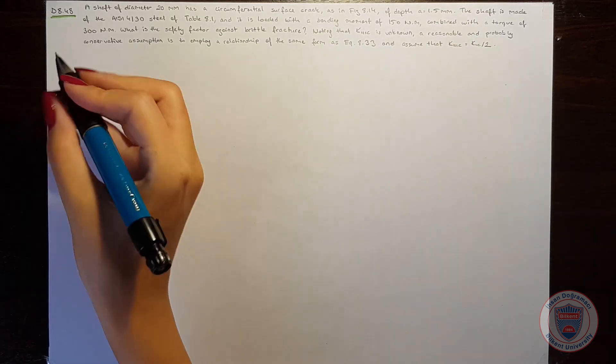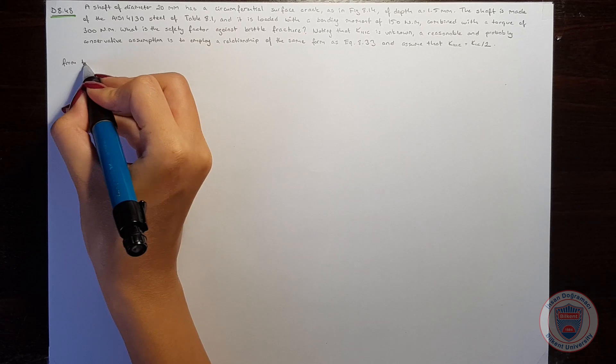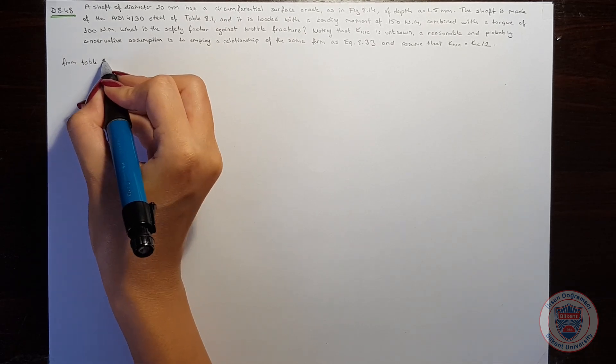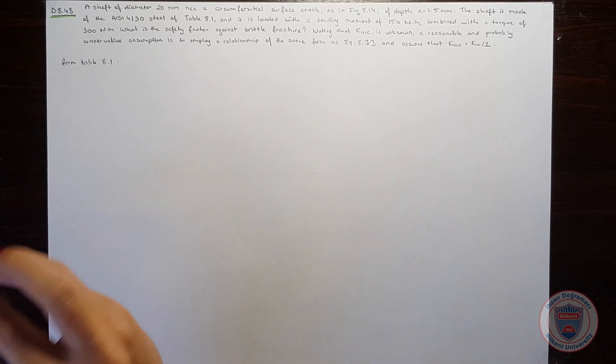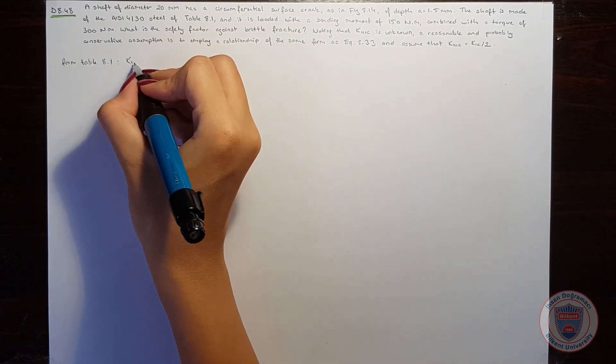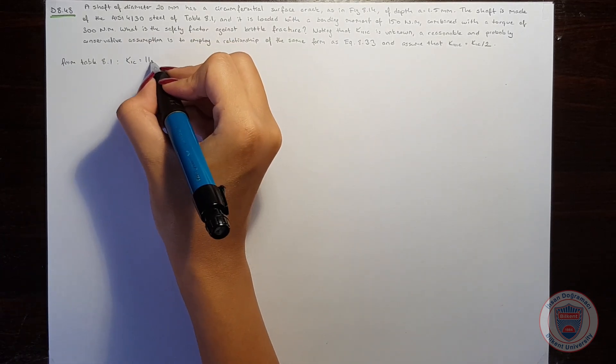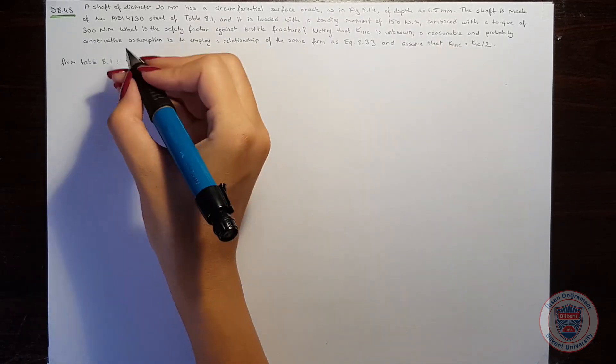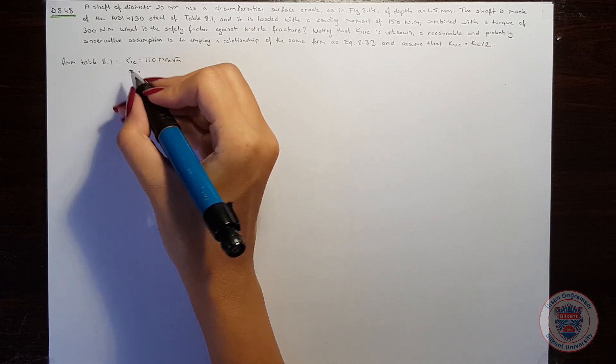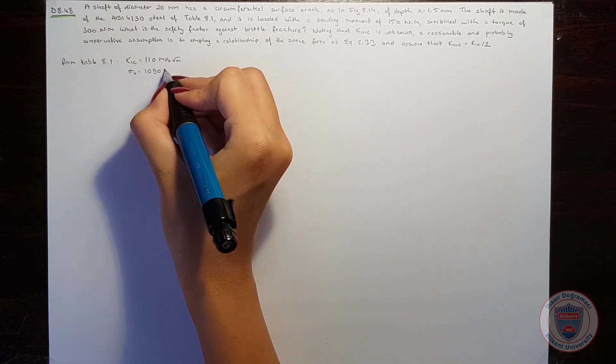Since K3C is unknown, we will assume that it equals K1C over 2. From Table 8.1 for AISI 4130 steel, the critical stress intensity factor K1C equals 110 MPa square root meters, and the yielding strength is 1090 MPa.